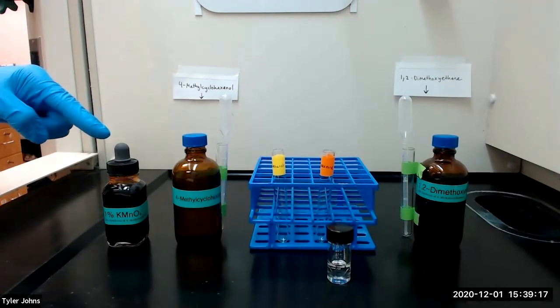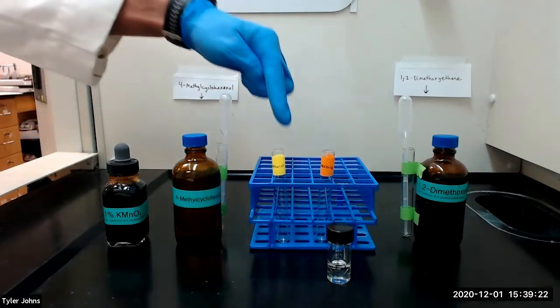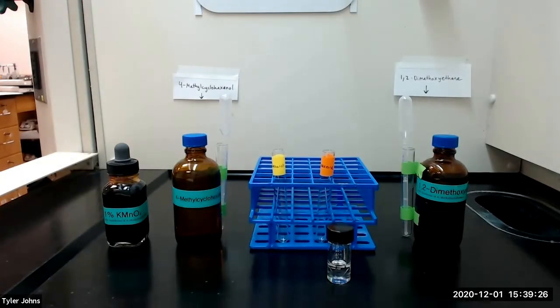We will next slowly add 1% aqueous potassium permanganate solution drop-wise to each test tube. Compounds containing double bonds react with a solution of potassium permanganate, which is purple, to discharge its color and produce a brown precipitate of manganese dioxide.